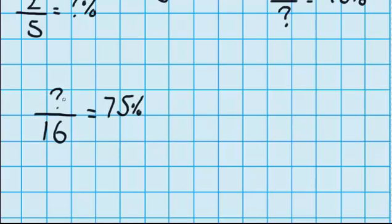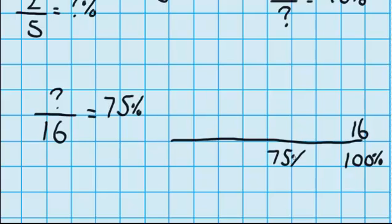We want to work out how many questions did you answer correctly. So just like last time, I'm going to draw this out on a number line. We know 100% correct would be getting all 16 questions right. And we know that you got 75%. So we're trying to work out how many questions was that.